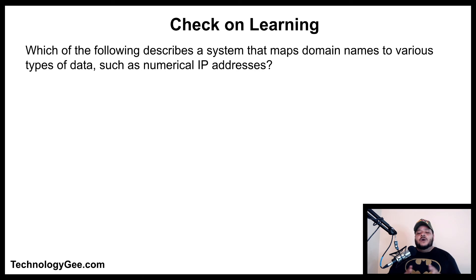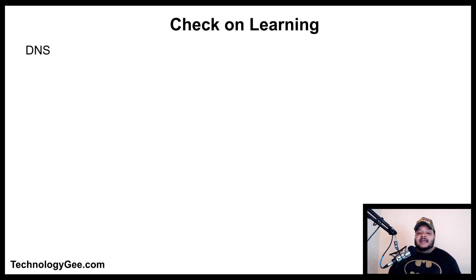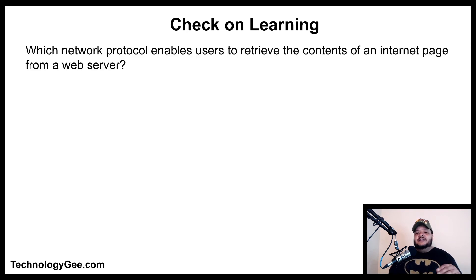Now let's get into some check-on-learning. Which of the following describes a system that maps domain names to various types of data such as numerical IP addresses — is it TCP/IP, DNS, SQL, or DHCP? The correct answer is DNS, or Domain Name System — the phone book of the internet. It takes a name like Google, Facebook, or YouTube, matches it to its numerical IP address, and sends you to visit that website. The next question: which network protocol enables users to retrieve the contents of an internet page from a web server? The answer is HTTP, or Hypertext Transfer Protocol.